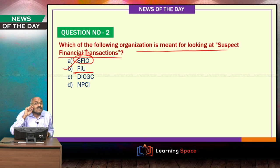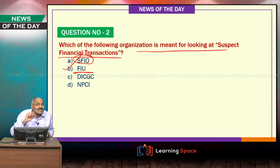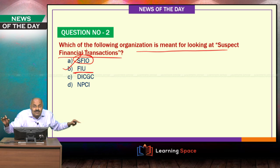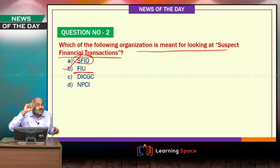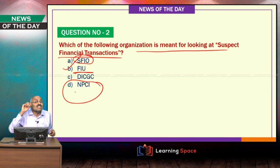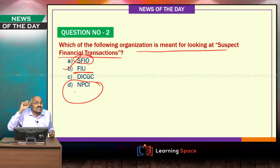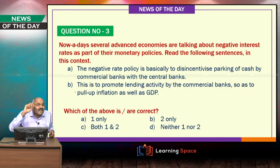DICGC — Deposit Insurance Credit Guarantee Corporation — is a wholly owned subsidiary of the Reserve Bank of India, which looks at insurance needs of customers when banks collapse. When banks collapse, each customer is insured up to a maximum of 1 lakh rupees. NPCI is the organization behind promoting digital and retail transactions in the country.